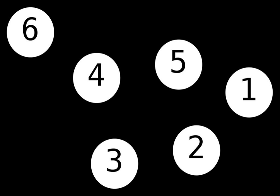In mathematics, and more specifically in graph theory, a graph is a structure amounting to a set of objects in which some pairs of the objects are in some sense related. The objects correspond to mathematical abstractions called vertices, also called nodes or points, and each of the related pairs of vertices is called an edge. Typically, a graph is depicted in diagrammatic form as a set of dots for the vertices, joined by lines or curves for the edges. Graphs are one of the objects of study in discrete mathematics.